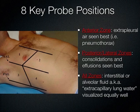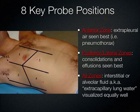Anteriorly is the best place to look for a pneumothorax. If you're supine and air has escaped from inside the lung into the pleural space, it's going to be anterior. Posterior-laterally, we can best see effusions — fluid in the pleural space — and consolidations, which are pneumonias or atelectasis, posteriorly because those are gravity dependent.